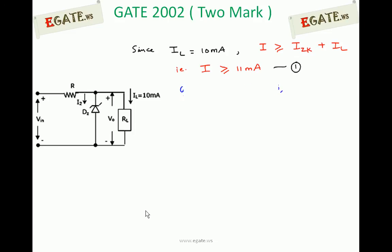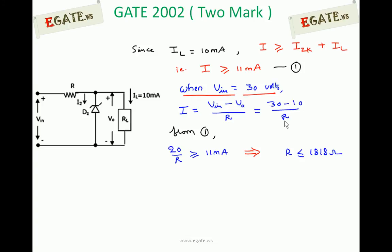First case: when Vin = 30V. Current flowing through resistor R is I = (Vin - V0)/R = (30 - 10)/R = 20/R. From equation 1, this current must be ≥ 11mA, so 20/R ≥ 11mA.